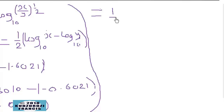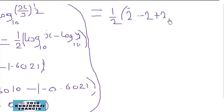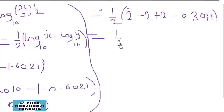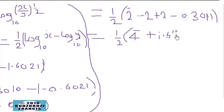So we rewrite this as one over two into bar 2 minus 2 plus 2 minus 0.3011. The minus 2 plus 2 is zero, so it has not changed the value. Bar 2 and bar 2 together give us bar 4, which is negative 4. Then 2 minus 0.3011 gives us positive 1.6989.